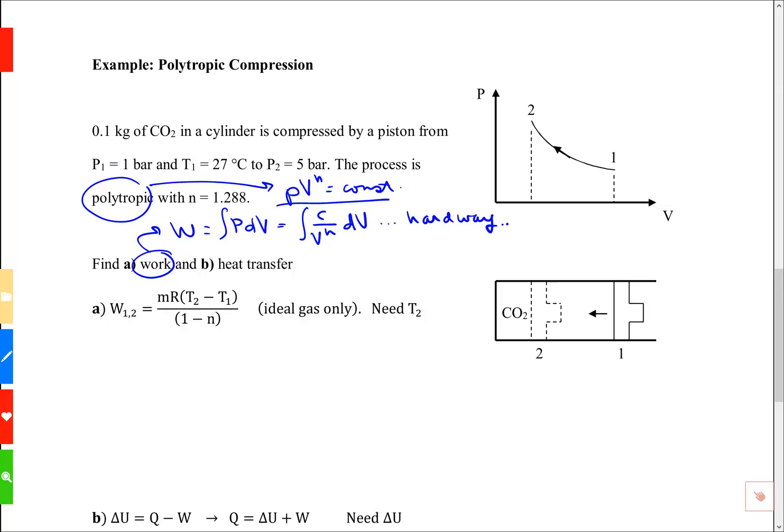We're going to use a relationship for ideal gas, where the work is given as mass times the gas constant times the temperature change for the process divided by 1 minus n. This is again specific to a closed system plus polytropic.